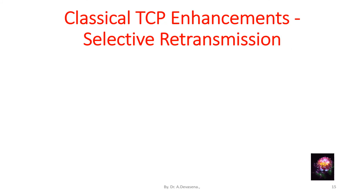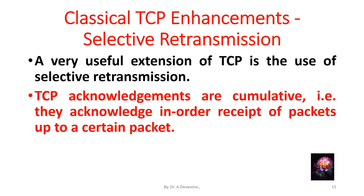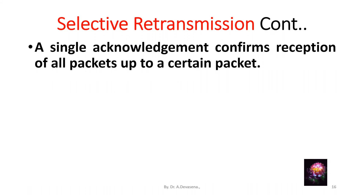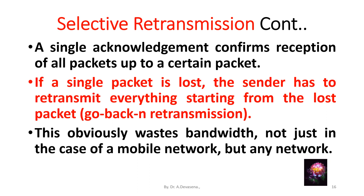The next topic in classical TCP enhancements is selective retransmission. TCP acknowledgements are cumulative — a single acknowledgement confirms reception of all packets up to a certain packet. If a single packet is lost, the sender has to retransmit everything starting from the lost packet, which is go-back-N retransmission. This obviously wastes bandwidth, not just in mobile networks but in any network.